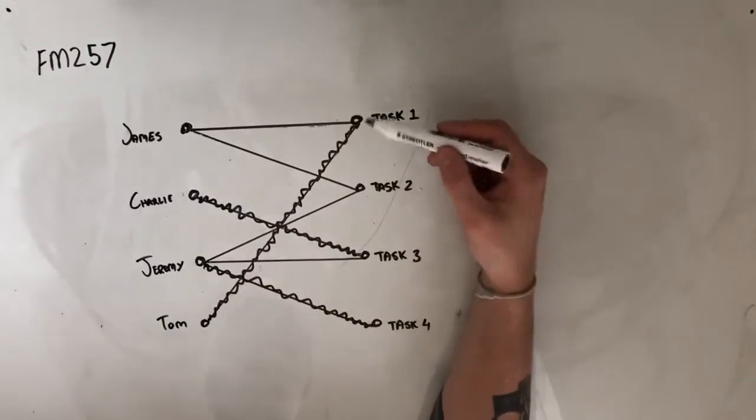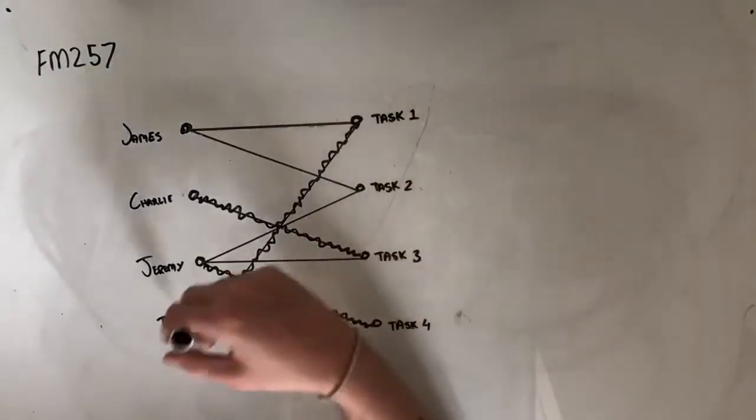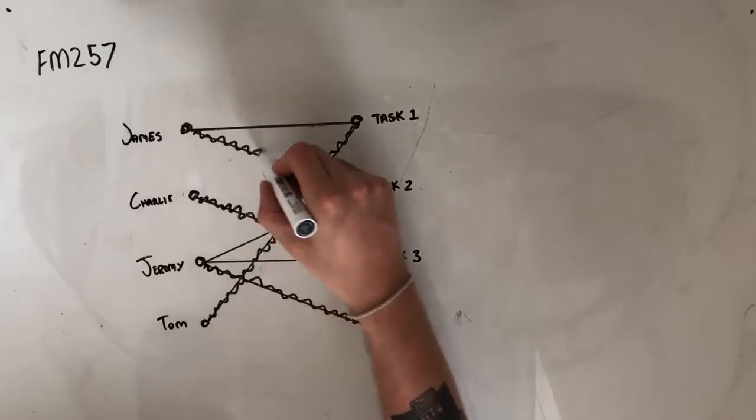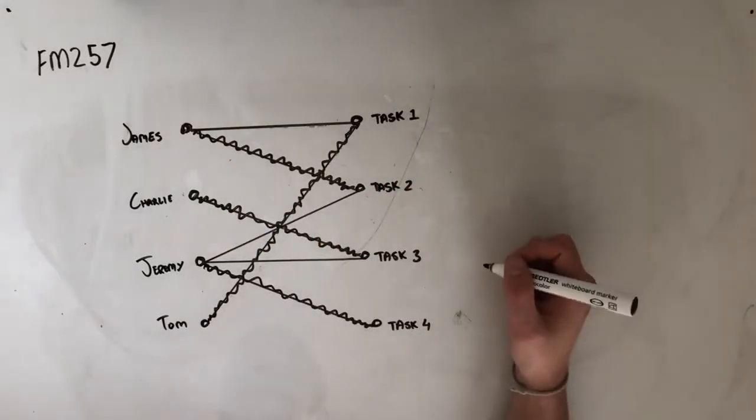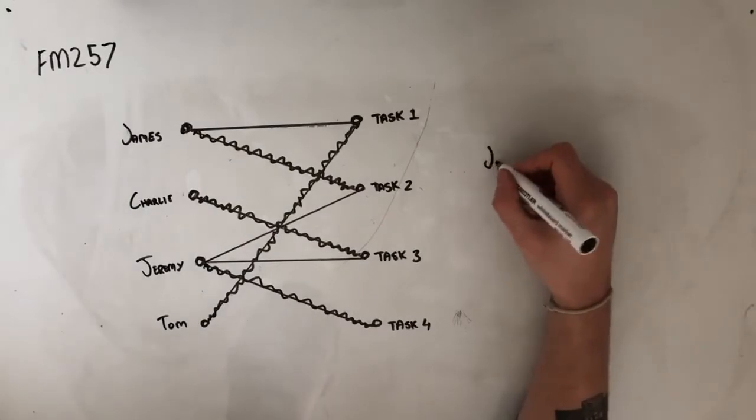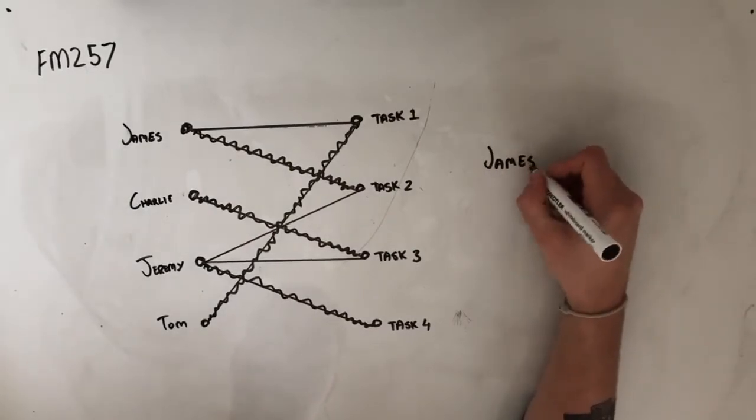And James was able to complete task one and task two. However, task one has been taken by Tom, so James will be left to complete task two. Meaning that our answer is James, option A.